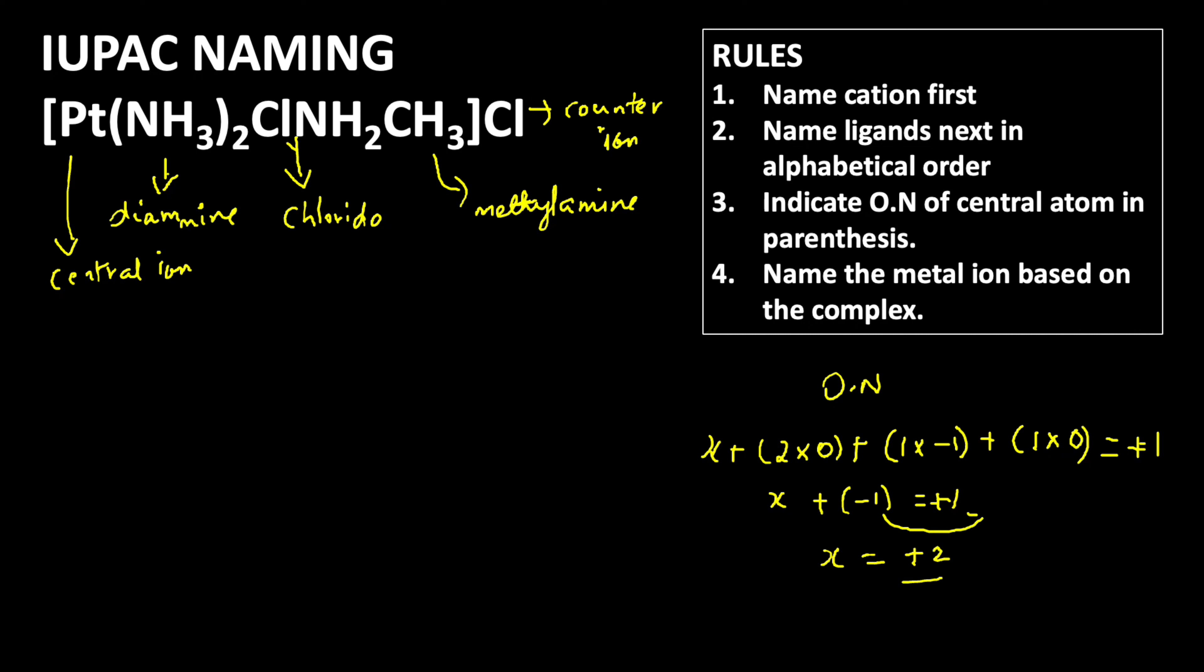So x is equal to plus two, because when this minus one goes to this side it becomes plus, so plus two. So oxidation state of the central ion in this compound is plus two.